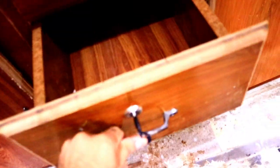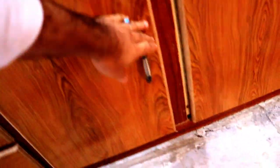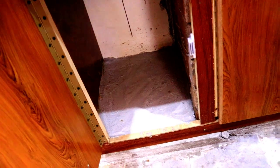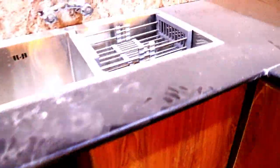These are shelves under the sink, you can see clearly. And this space here is for the dishwasher.